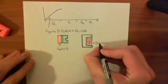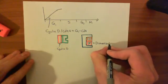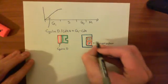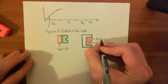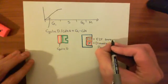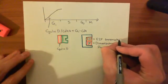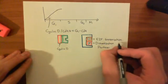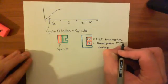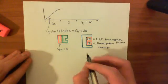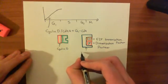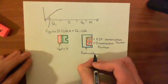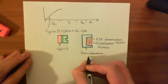DP stands for dimerization partner of E2F transcription factors. In a cell which is inactive and not dividing, the E2F transcription factor with its dimerization partner are held sequestered by the retinoblastoma protein, usually denoted RB.